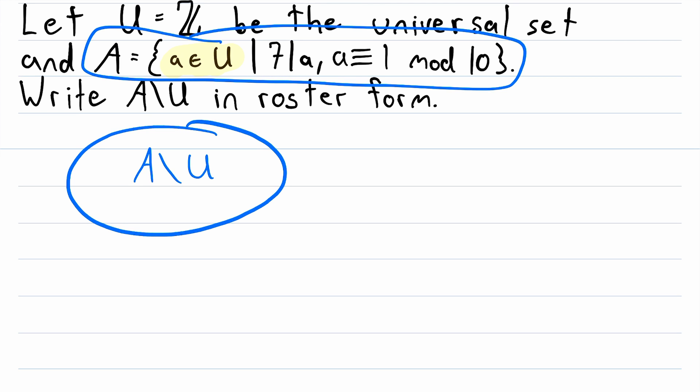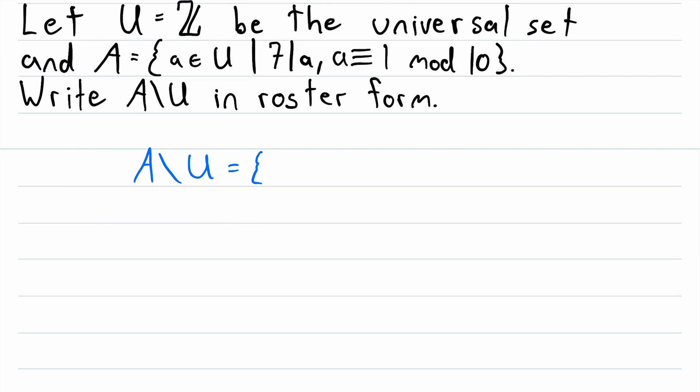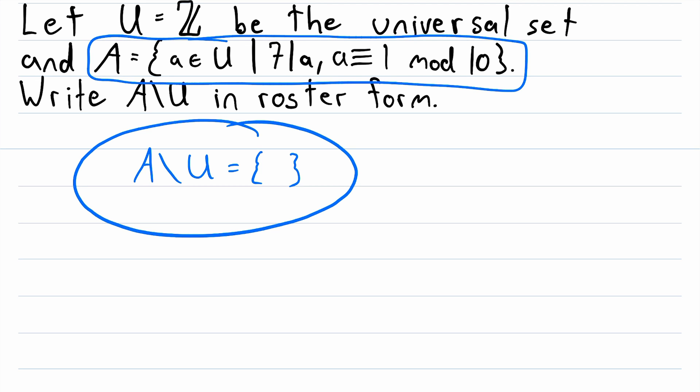Thus, there doesn't exist an element that's in A but not U, so this set is empty. So, to write it out in roster form, we just open the set, and then we close the set. And that's it. Again, this set is empty, because by definition, every element in A has to also be in U. So there are no elements in A that are not in U. So this set is the empty set.